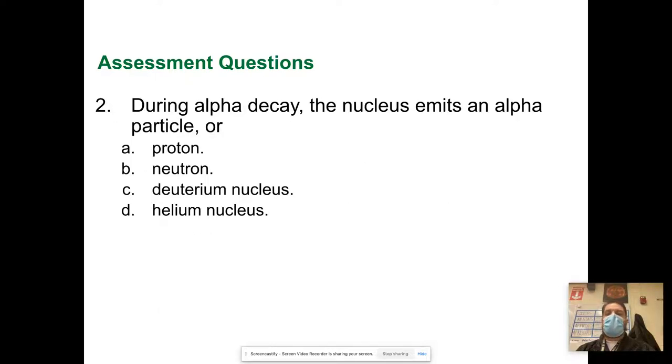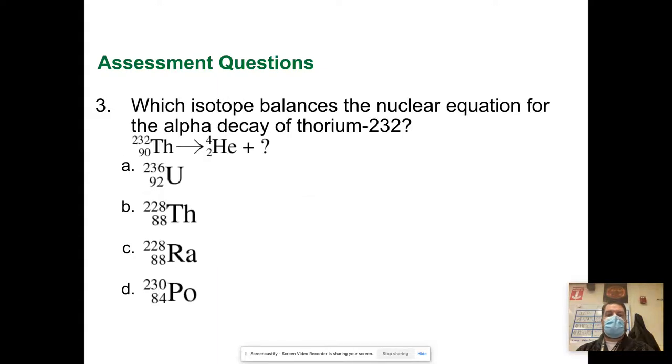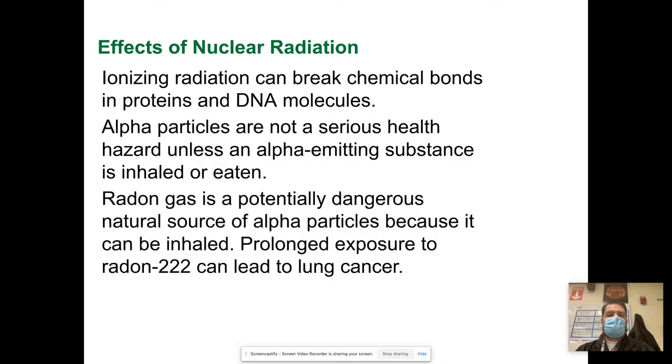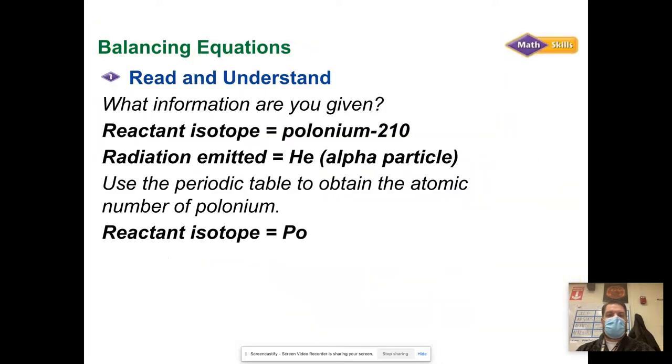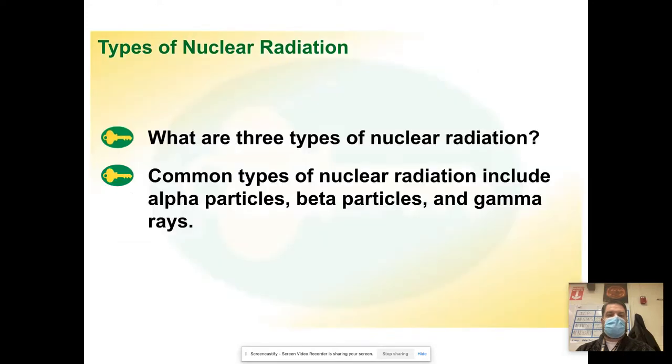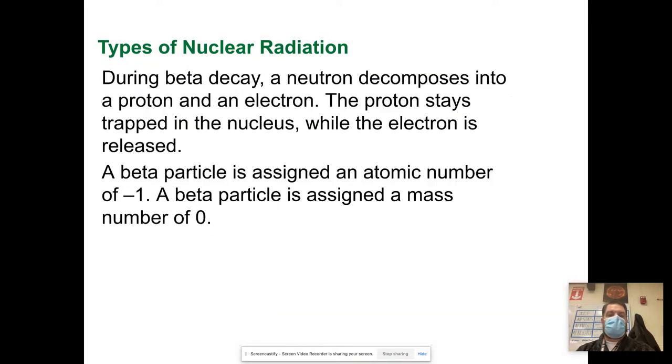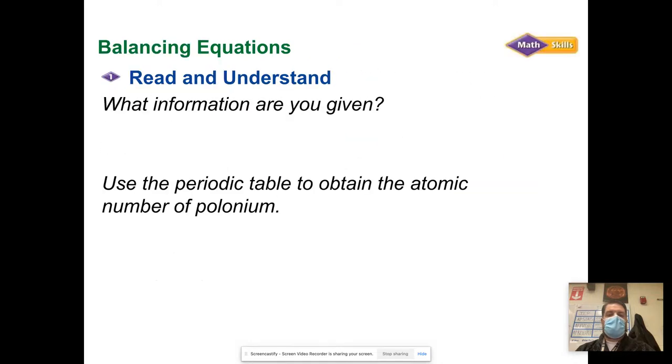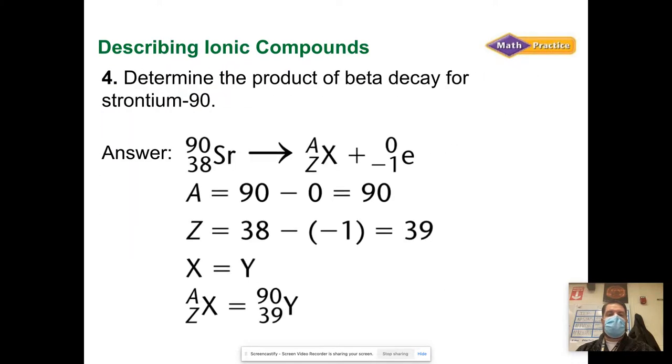During alpha decay, a nucleus emits an alpha particle. What's an alpha particle? It's a helium nucleus, right. Wait, isn't that a beta? No, I gotta double check that. I think that's, yeah, no, alpha's, yeah. I'm sorry, I got confused. Yeah, so it's a helium nucleus, two protons and two neutrons.